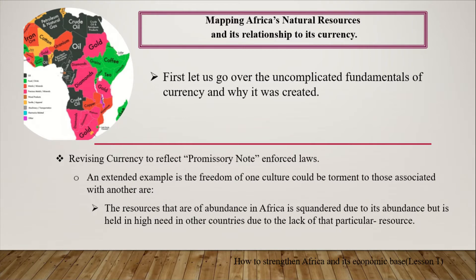The resources that are in abundance in Africa are squandered due to their abundance, but are held at high need in other countries due to the lack of that particular resource. Just like gold, oil, diamonds, and rubies — it's plentiful there. But someone from outside sees it and thinks, we can't even get a hold of this stuff, why don't we just go in there and grab as much as we can, then do something else with it and resell it.